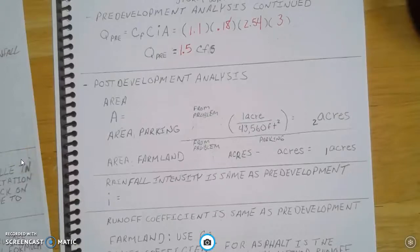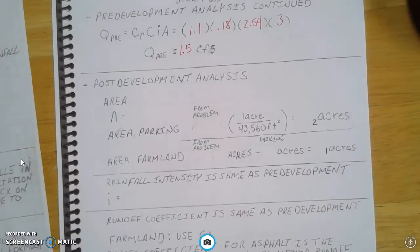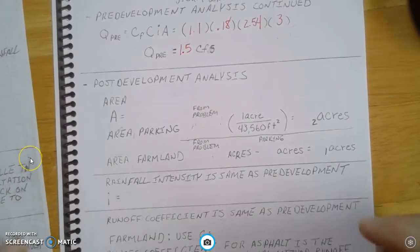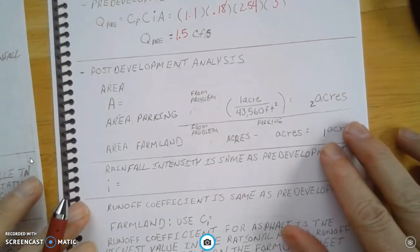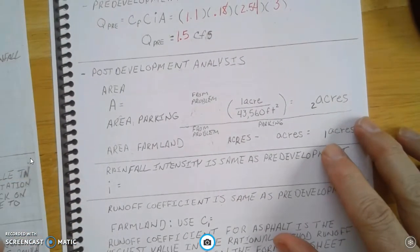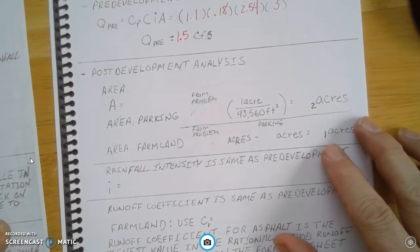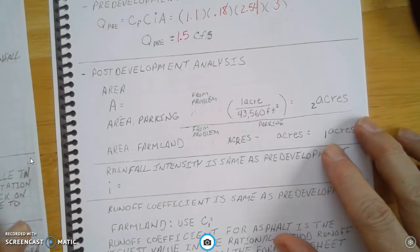Now we're going to start looking at the post-development for our runoff calculations. The first thing we're going to do is calculate the area of the parking lot. That's a 30,000 square foot parking lot. By the way, that has to be stated in acres.